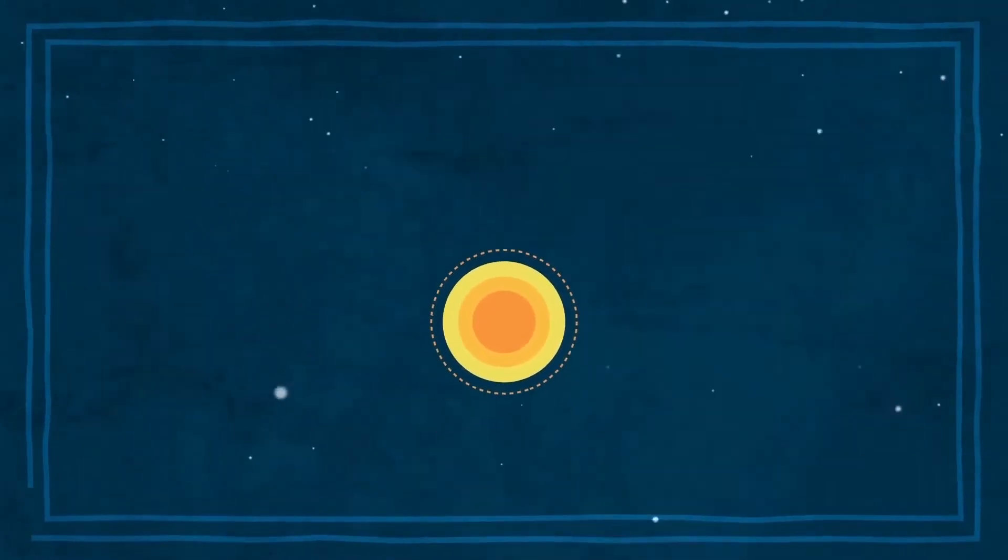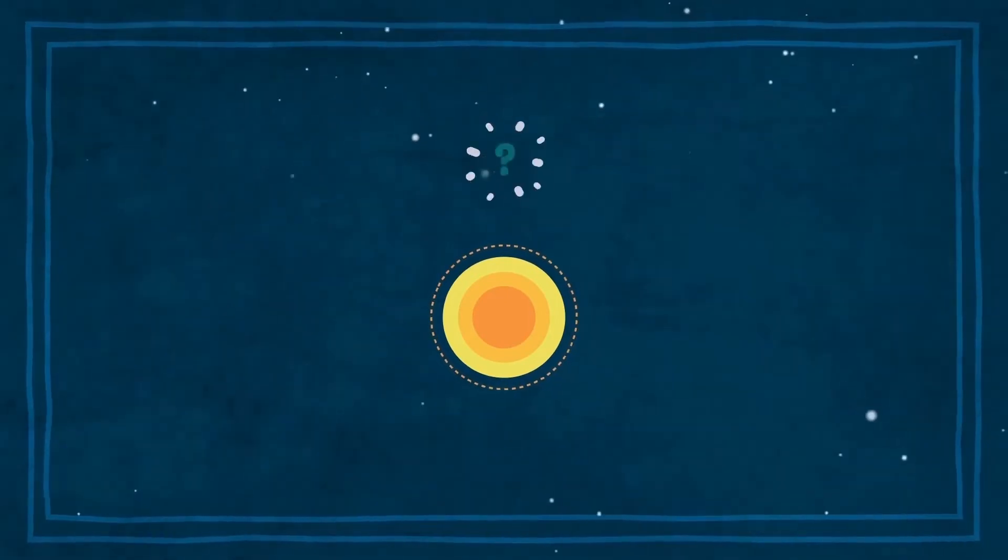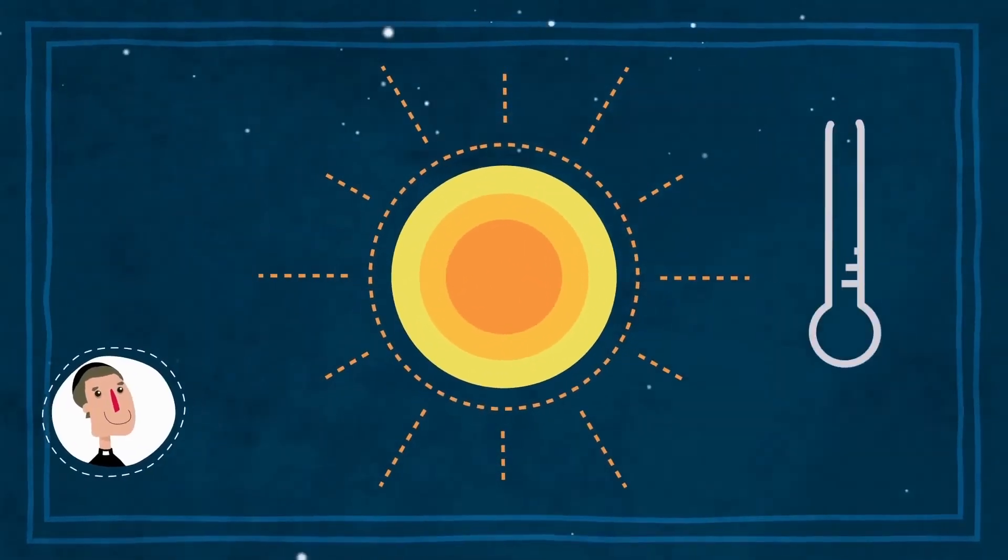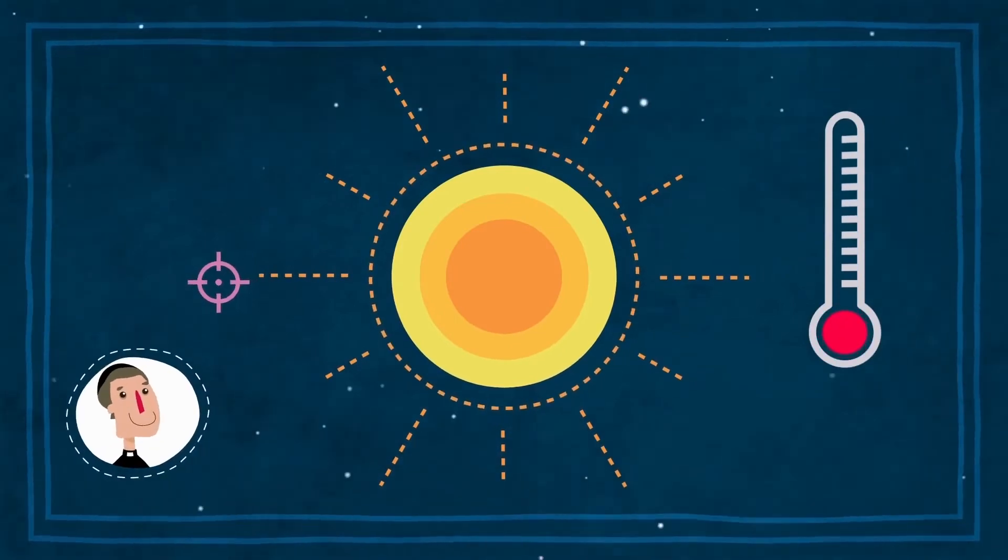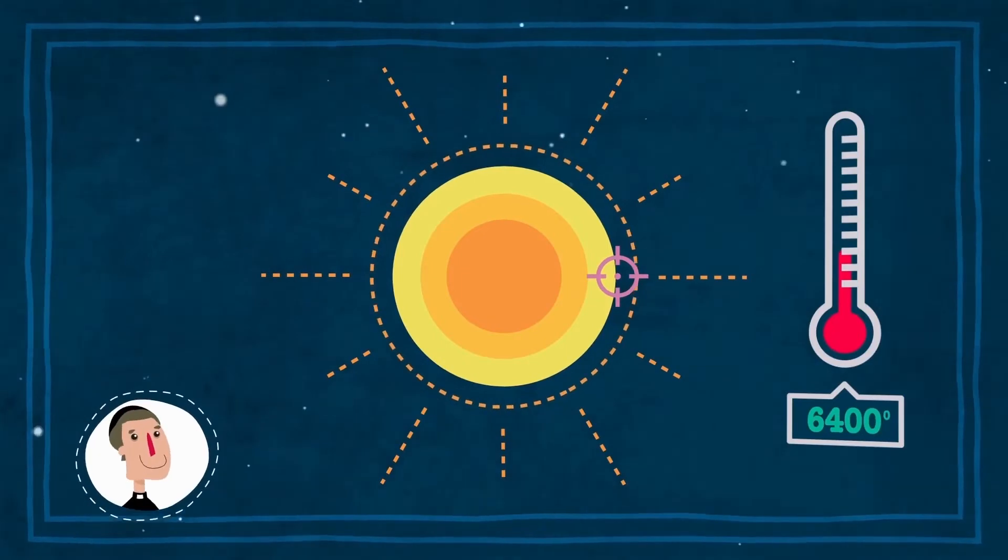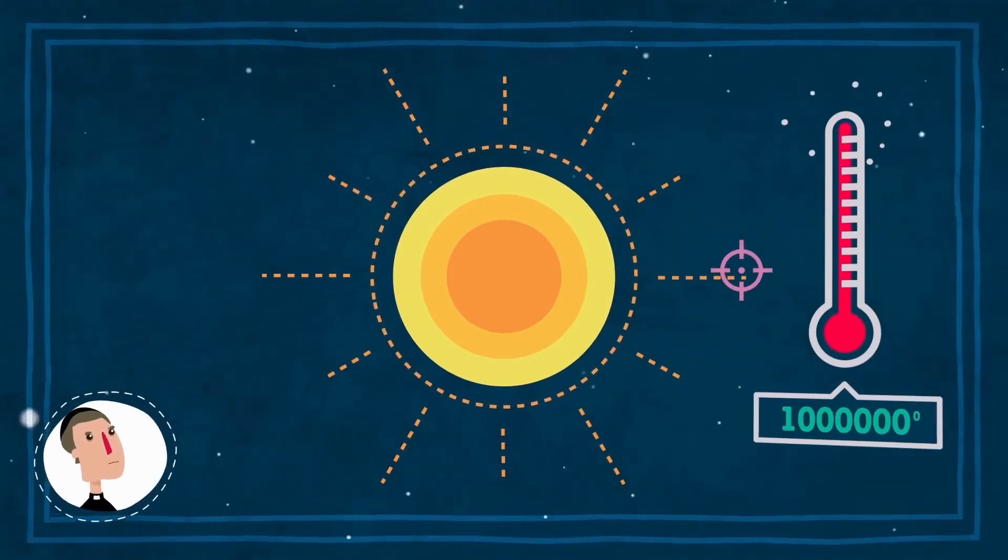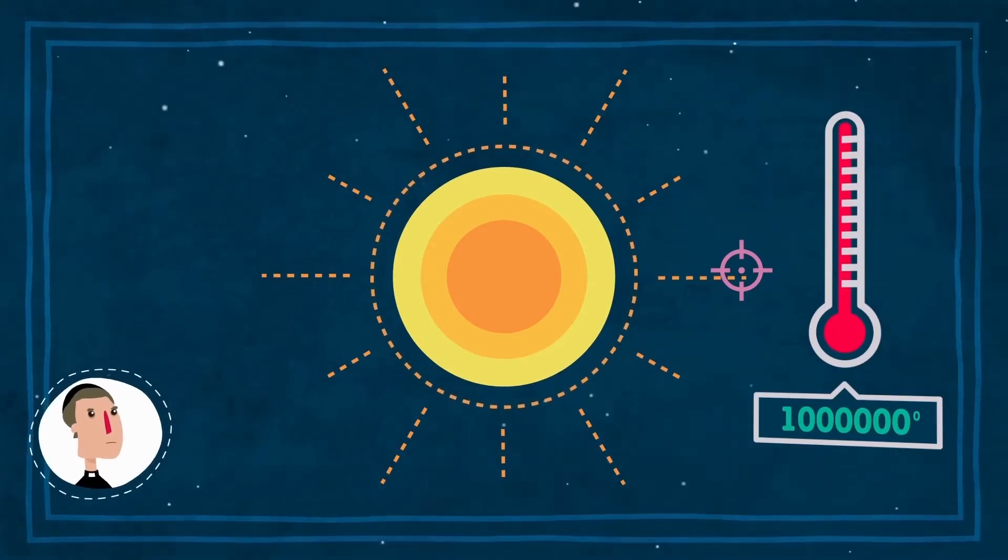¿Pero por qué son tan importantes? Bueno, digamos que el Sol está lleno de enigmas no resueltos. Por ejemplo, ¿sabías que las capas externas están mucho más calientes que la superficie? La temperatura de la corona solar es de más de un millón de grados, mientras que apenas hay 6.000 en la superficie.